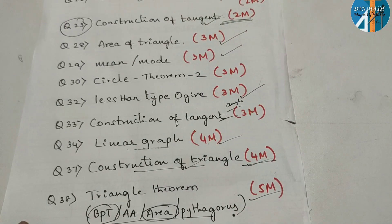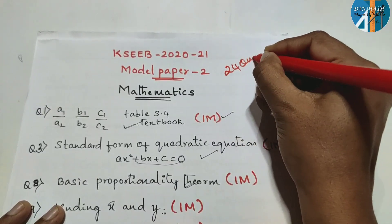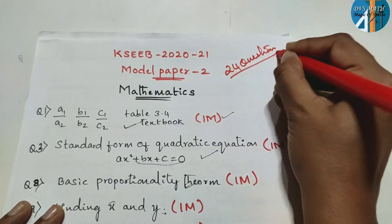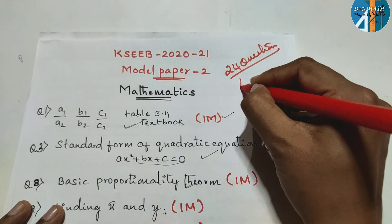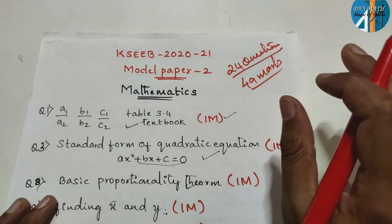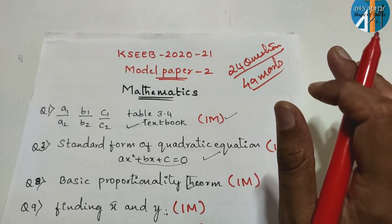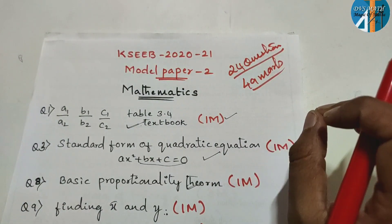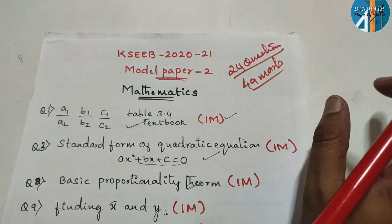Let me calculate. 24 questions. 24 questions. 49 marks will come. 49 marks. And as I said, if the pattern is like this, the pattern will definitely not change.